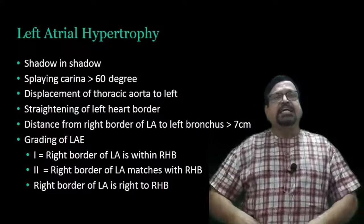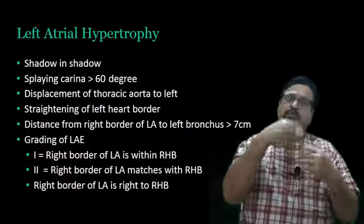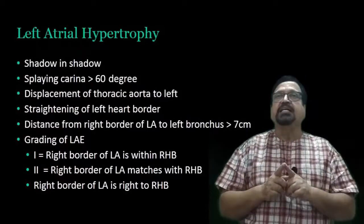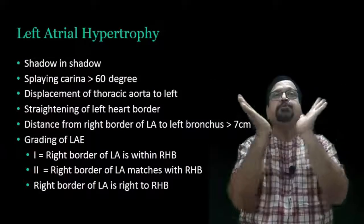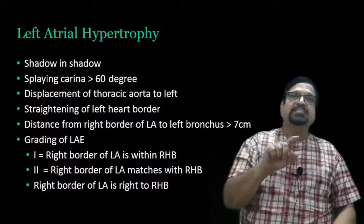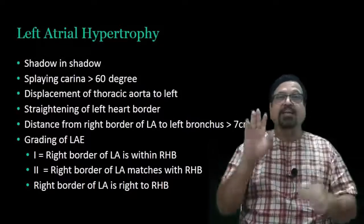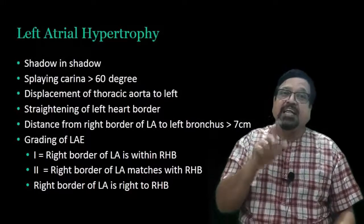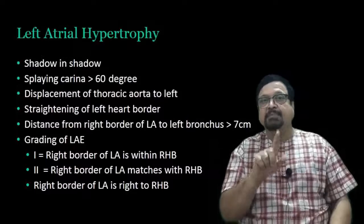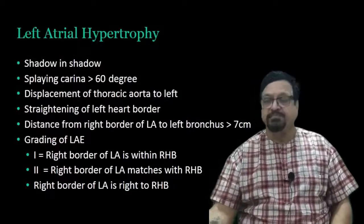Cardiac enlargement - plain X-ray gives a fairly good idea. First is left atrial hypertrophy. Left atrium is basically a posterior structure. It is just below the carina. There is displacement, straightening of the cardiac border. Left atrial enlargement can be graded: grade one is where the left atrial border matches the right heart border, grade two is LA matches right heart border, and grade three or more is where the right border of the heart is further displaced. These are criteria for atrial enlargement.